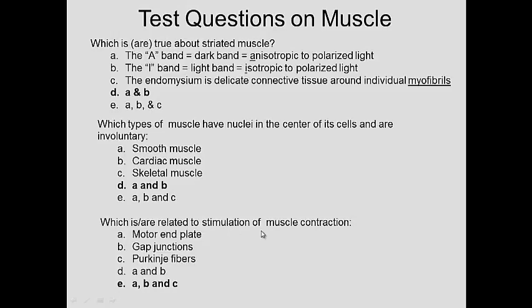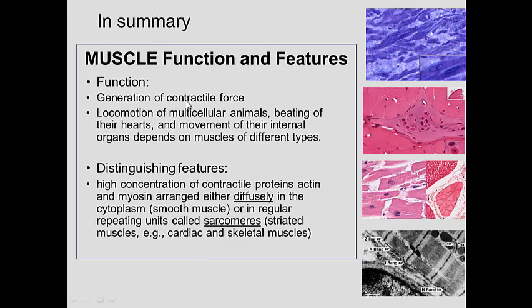Which are related to stimulation of muscle contraction? Motor end plates — yes, that's how the nerve tells skeletal muscle to move. Gap junctions — yes, in cardiac muscle they allow contractions to occur in synchrony by enabling communication between adjacent cells. Purkinje fibers — yes, they go down through the ventricle to allow both ventricles to contract at the same time.